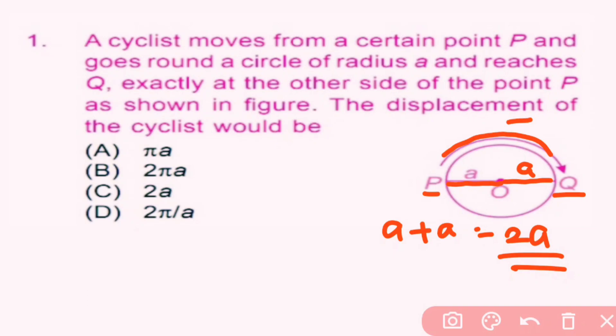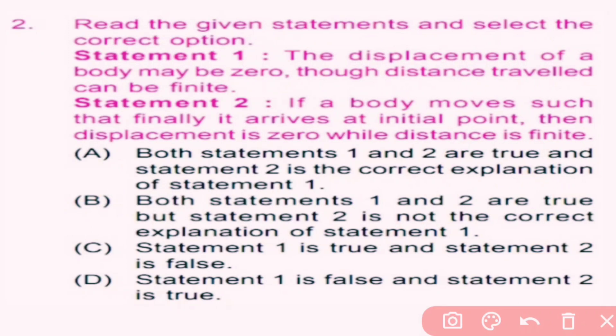So a plus a equals 2a, and the shortest distance is 2a. Therefore the displacement is 2a, and C is the correct answer. Question number 2: Read the given statements and select the correct option. Statement 1: The displacement of a body may be zero though distance travelled can be finite. Statement 2: If the body moves such that finally it arrives at the initial point, then the displacement is zero while distance is finite.